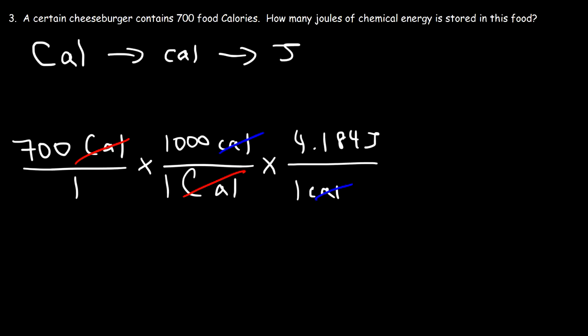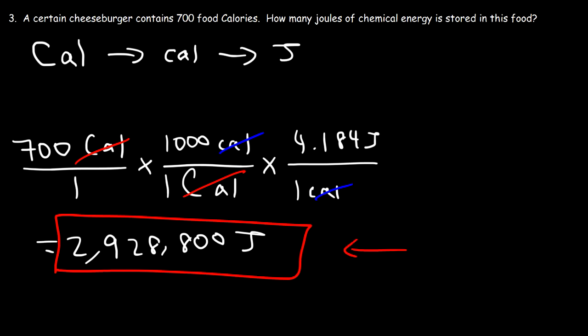So it's going to be 700 times 1,000 times 4.184. So one cheeseburger has 2,928,800 joules of chemical energy stored into it. That's a lot of energy to burn. And so that's the answer.